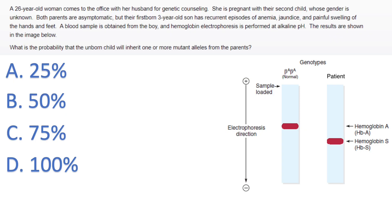Moving on to the last question. A 26-year-old woman comes to the office for genetic counseling — she's pregnant with their second child whose gender is unknown. Both parents are asymptomatic. The first-born three-year-old son has recurrent episodes of anemia, jaundice, and painful swelling in the hands and feet — this is sickle cell disease. A blood sample is obtained and hemoglobin electrophoresis is performed. The patient has a thick band at hemoglobin S and no band at hemoglobin A, meaning he's homozygous for sickle cell hemoglobin and therefore has sickle cell disease.